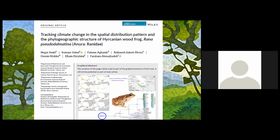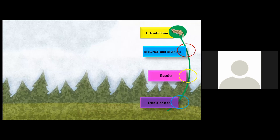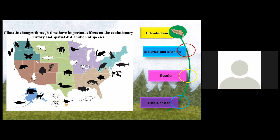First, I wanted to talk about the introduction, and after that, materials and methods, results, and discussion. As you know, climate change through time has had important effects on the evolutionary history and especially the preservation of species. There is much evidence that arctic creatures were significantly influenced by Pleistocene climatic conditions at a timescale of 100,000 years ago. Amphibians are ideal model organisms for the reconstruction of the colonization history of biomes.